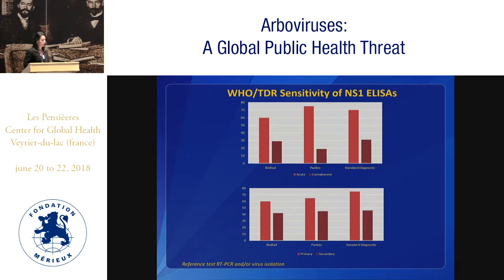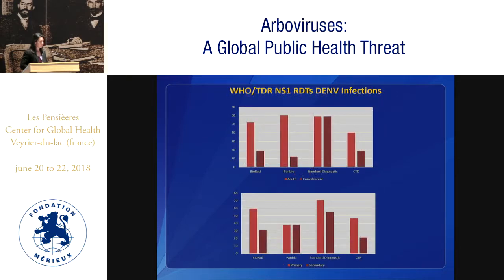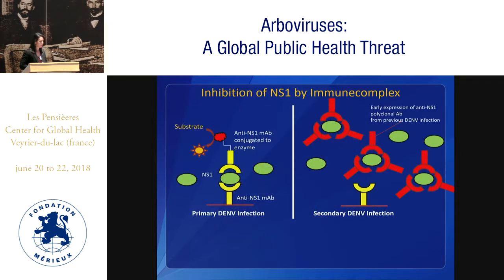The issue with NS1 as an ELISA test looking for acute infection is the problem we identified in the 2014 multi-country study with WHO. You're always going to have issues with acute versus convalescent — it's always going to be more sensitive in acute ELISA assays, and always more sensitive in a primary infection. This is recapitulated in the WHO TDR study with RDTs, showing acute always being more sensitive, and primary infections typically always more sensitive than secondary infections. This has to do with inhibition of NS1 by immune complexes. In a primary infection there's no antibody blocking its ability to bind to your anti-NS1 monoclonal antibody. However, in secondary infections, the high-level IgG from the anamnestic response is directed not just against the envelope protein but also against NS1, and it gets blocked early by polyclonal antibodies.